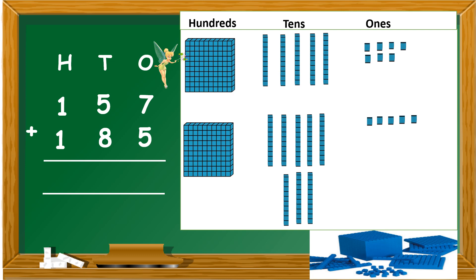So, we are going to do the same problem, but this time we are going to use base 10 blocks. Here, I have the numbers represented using the base 10 blocks. In the first row, we have 100, 5 tens, and 7 ones — so that is 157. In the second row, we have 100, 8 tens, and 5 ones — so we have 185.